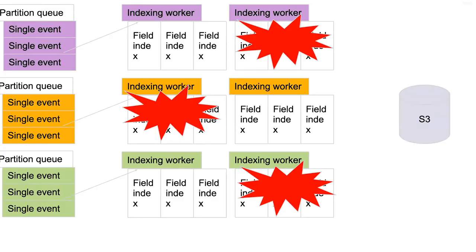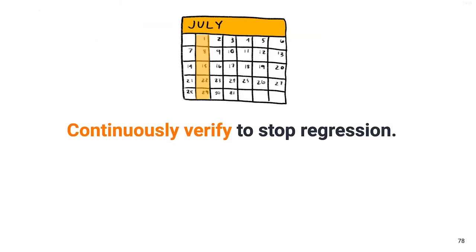Our previous design for retrievers was that if one went down, the other would rsync off its buddy to recover. But what if you lose two indexing workers at the same time from the same partition? As we were cycling over retriever fleets — moving them to a new class of instances — we thought: what if instead of just worrying about peers, you could just replay off the AWS snapshot? It makes your bootstrap choice a lot more reliable. By snapshotting, we're now able to restore workers on demand and continuously test them.